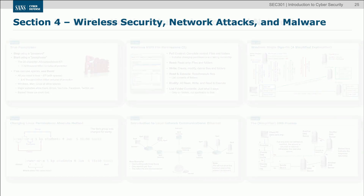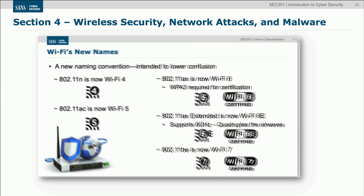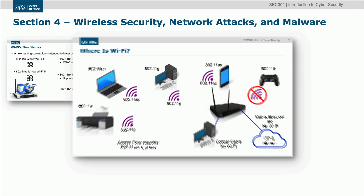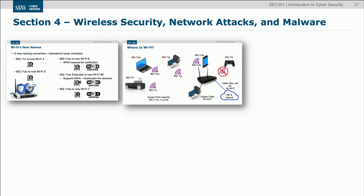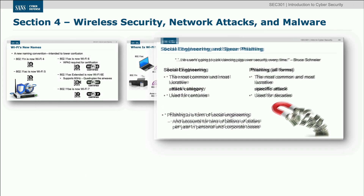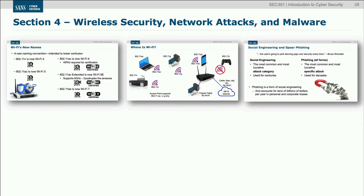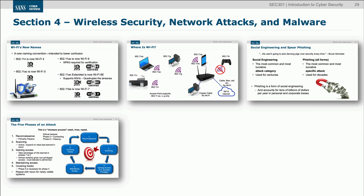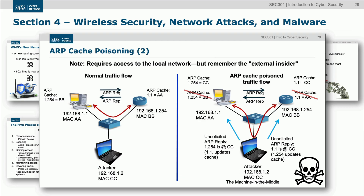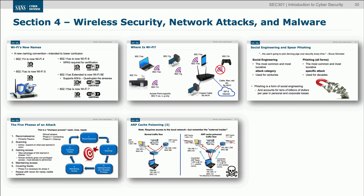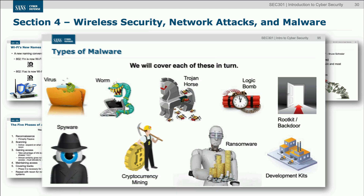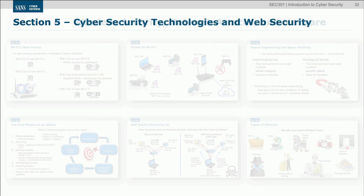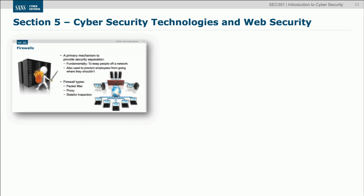When we get into our fourth section, we cover wireless security, both Wi-Fi and Bluetooth. We also move into some information on network attacks, social engineering, some specific types of attacks, and diagram them and explain how they work. And of course, we'll wrap up that section talking about malware and anti-malware.